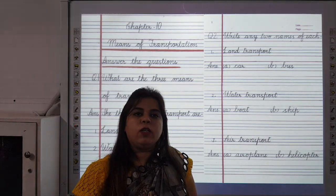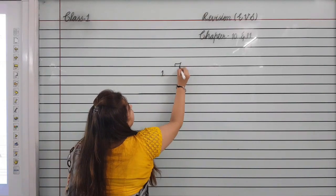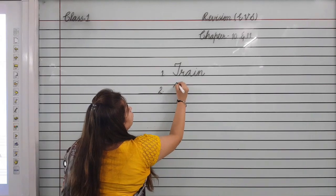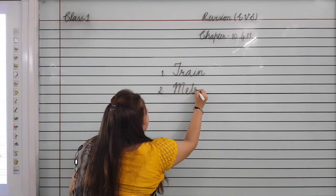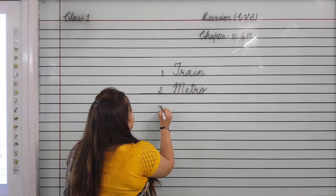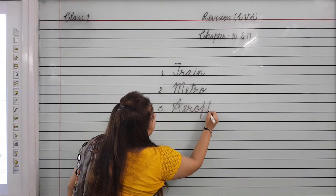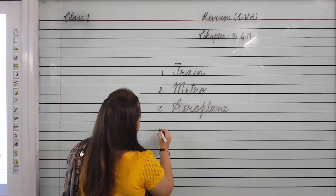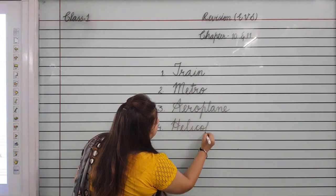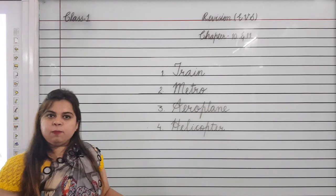Now we will revise spellings of this chapter. First is train: T-R-A-I-N. Second is metro: M-E-T-R-O. Third is aeroplane: A-E-R-O-P-L-A-N-E. Fourth is helicopter: H-E-L-I-C-O-P-T-E-R. I hope you have revised these spellings with me.